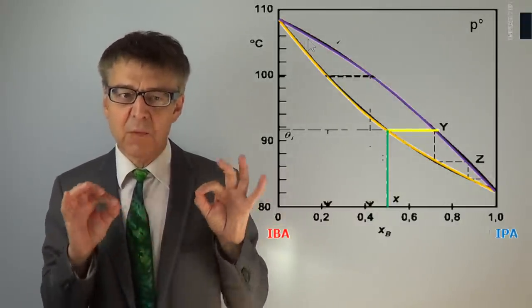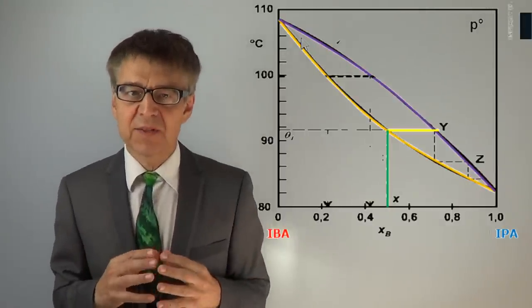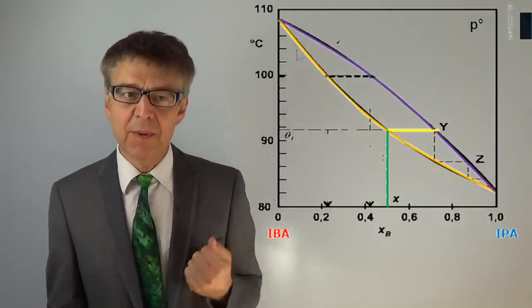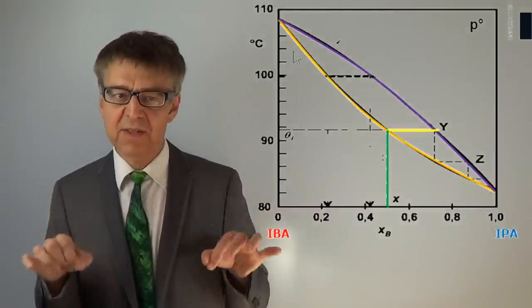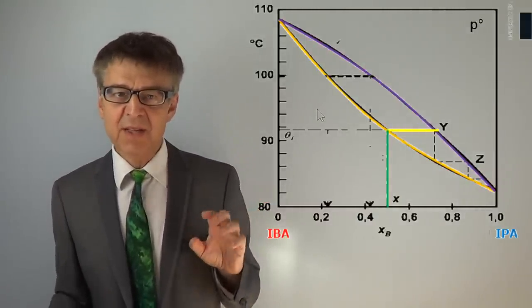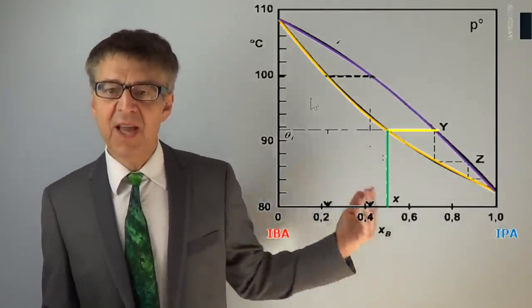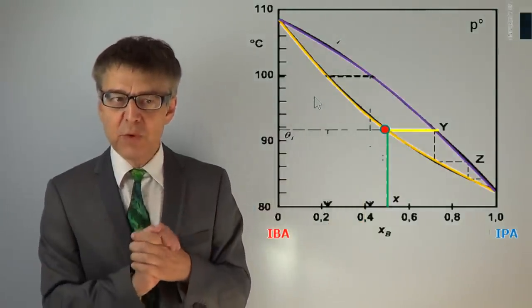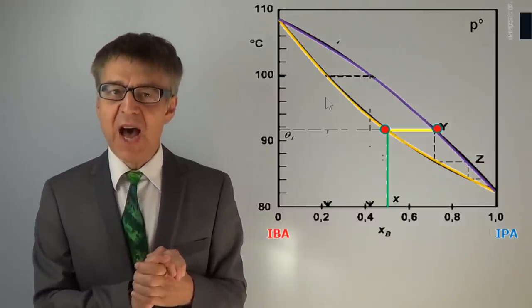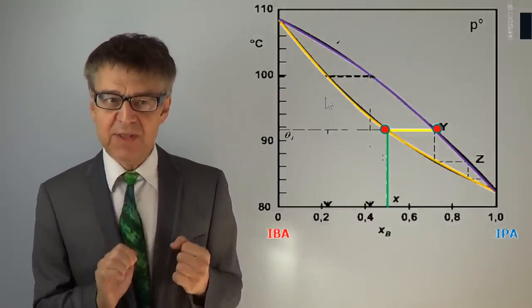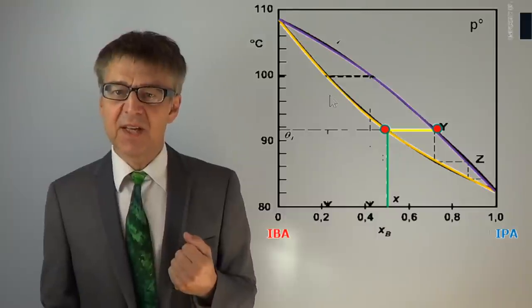The composition of the gas phase above the boiling liquid 50-50 mixture we may determine using the so-called tie line. A tie line is an equilibrium line drawn in a two-phase region. We can draw any number of tie lines in the two-phase region. Each horizontal line between the bubble point curve and dew point curve is in fact a tie line. A tie line connects two phases in equilibrium. In our case, it connects the 50% liquid phase to the 70% gas phase. The gas phase is thus enriched in the lower boiling component IPA. A 50-50 mixture of IPA and IBA begins to boil at 92 degrees Celsius and the gas phase that results is approximately 70% IPA.